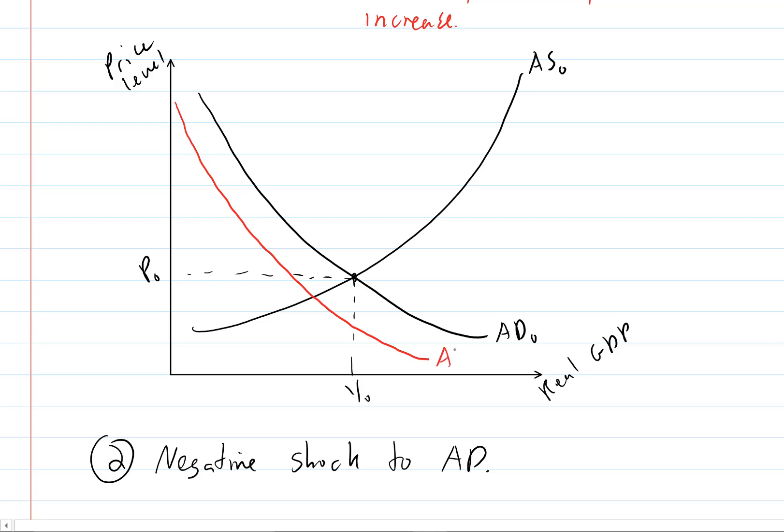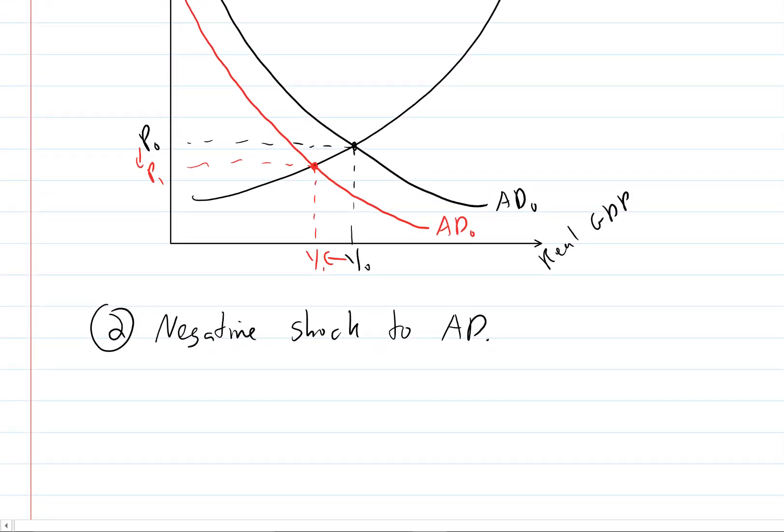So this aggregate demand curve is going to be pushed to the left, downwards and to the left, where it meets the old supply curve is going to be equilibrium price and real GDP. So now we have a fall in the price level, and a fall in real GDP caused by this decrease in aggregate demand, so this negative aggregate demand shock.